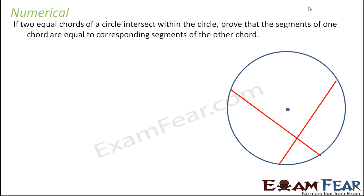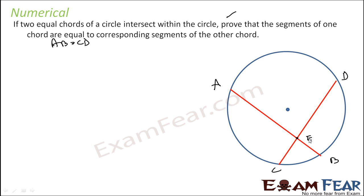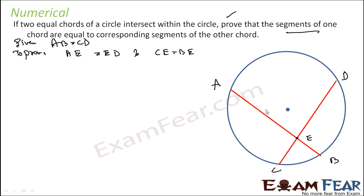Let's check one more numerical. Two equal chords of a circle intersect within the circle. They are two equal chords — let's name them AB and CD, and they are equal. They intersect at point E. Prove that the segments of one chord are equal to the corresponding segments of the other chord. So we have to prove that AE is equal to ED, and CE is equal to EB.